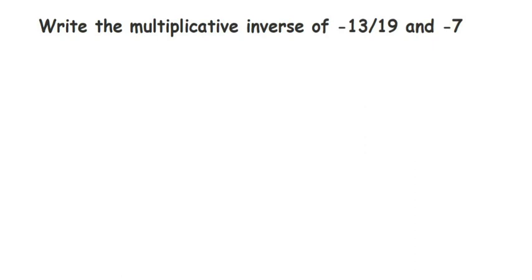Here's a question on multiplicative inverse: write the multiplicative inverse of minus 13 by 19 and minus 7. One is a rational number and one is a whole number, so let's see how to solve this.